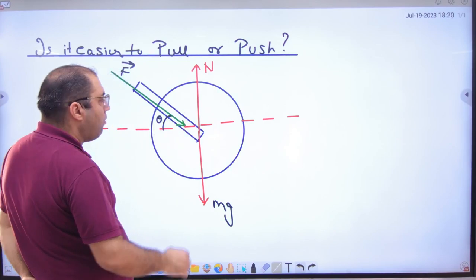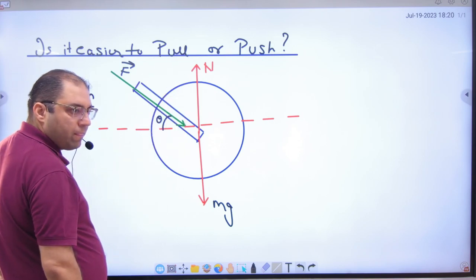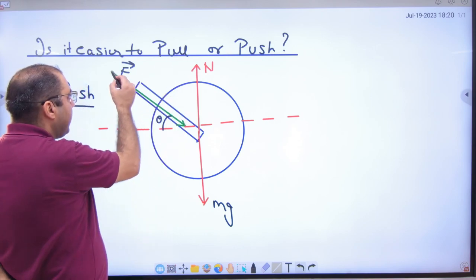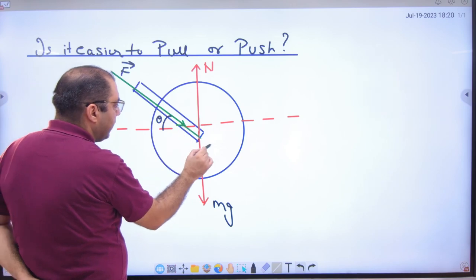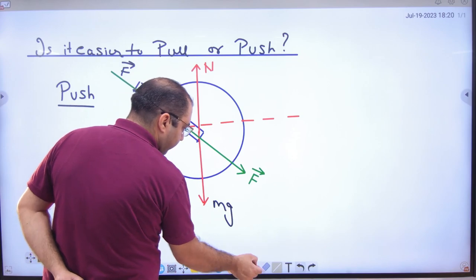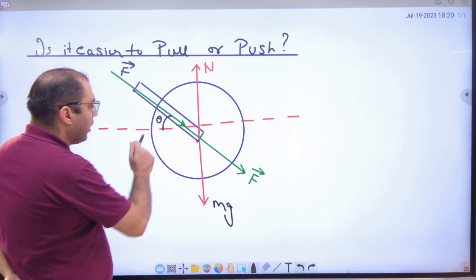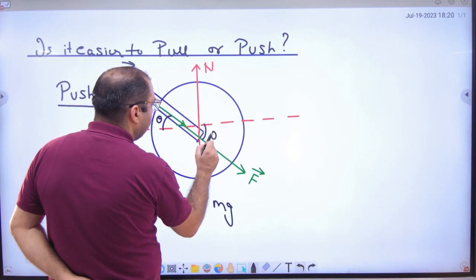Now draw the components. Some people say that this is f, f cos theta, f sin theta. No, that's not. You will not do this. Now do the work. Let us extend it a little further. This is the direction of the vector, the whole vector f. So if it is theta, then this is also theta.